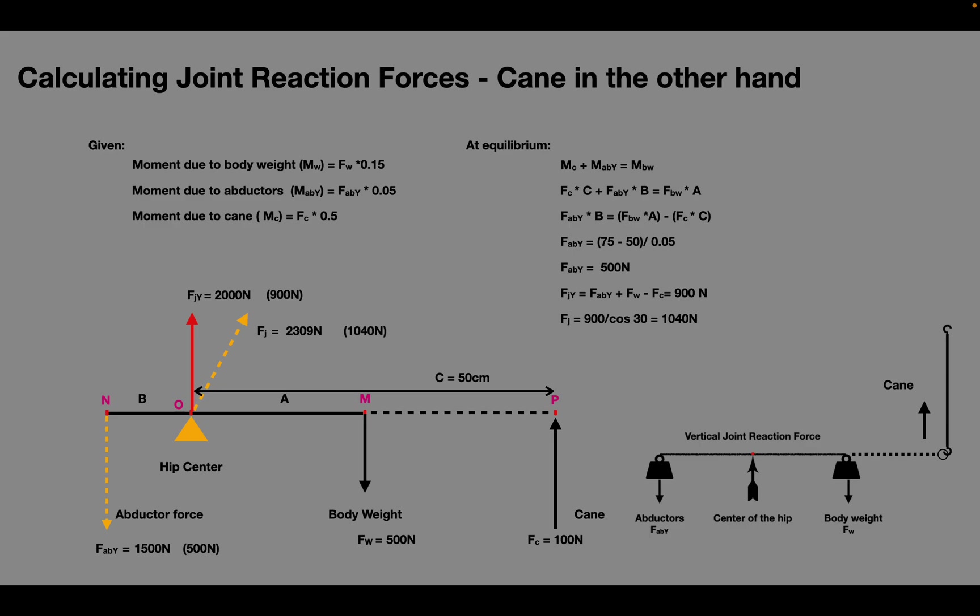In summary, moment produced by a cane opposes the moment produced by the body weight and hence the net effect is reduction of the abductor force necessary to keep the pelvis horizontal and net reduction in joint reaction force.